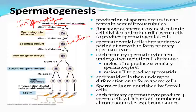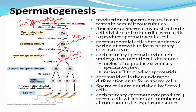These mature spermatogonial cells have a dense cytoplasmic content and are still diploid (2N). This mature cell will now differentiate through several mitotic divisions into a primary spermatocyte. The primary spermatocyte is also 2N in number, because it is still undergoing mitotic division only. The ploidy has not been changed up to this point.